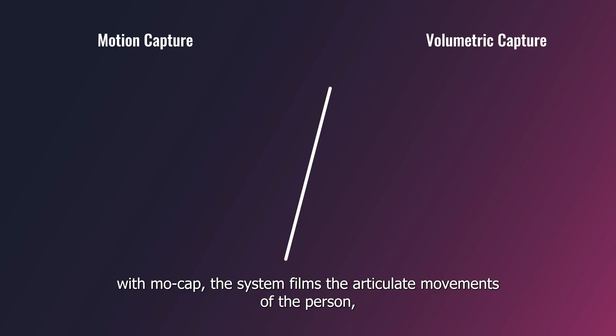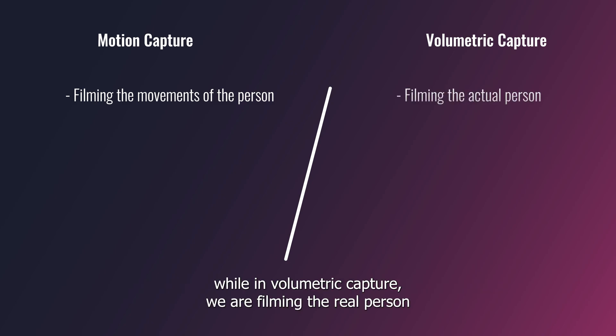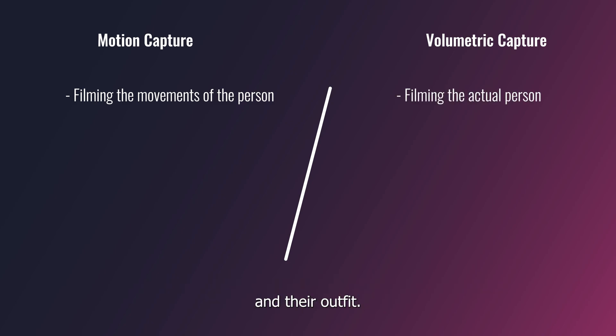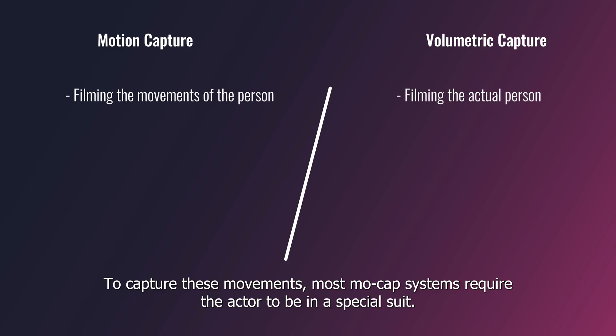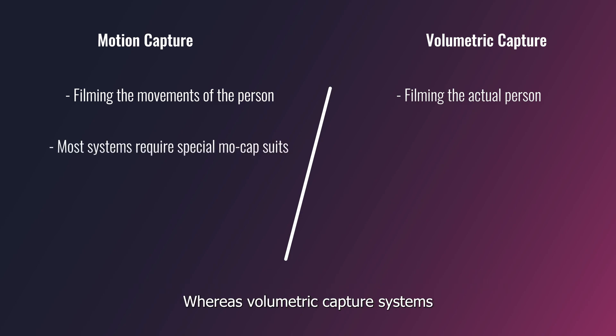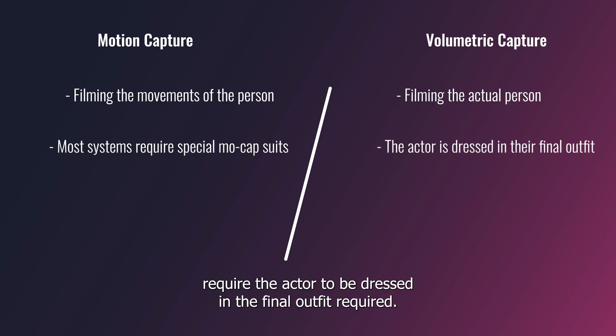To summarize: with mocap, the system films the articulate movements of the person, while in volumetric capture we are filming the real person and their outfit. To capture these movements, most mocap systems require the actor to be in a special suit, whereas volumetric capture systems require the actor to be dressed in the final outfit required.